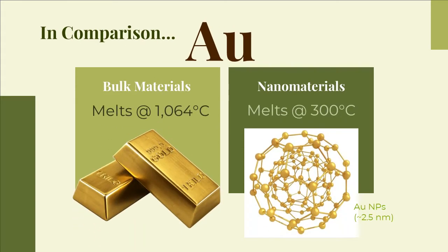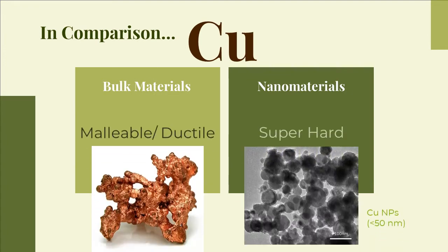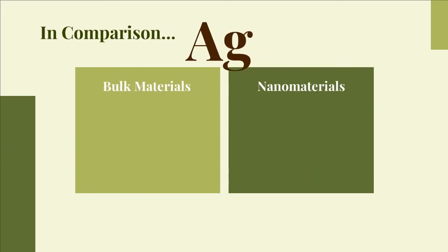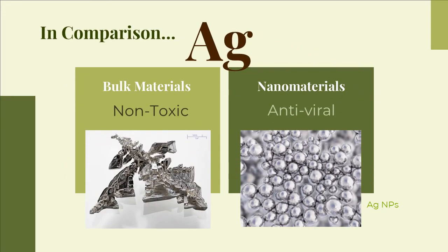For instance, gold nanoparticles around 2.5 nanometers in size melt at much lower temperatures, around 300 degrees Celsius, than gold slabs, which melt at 1064 degrees Celsius. Copper nanoparticles smaller than 50 nanometers are considered super hard materials that do not exhibit the same malleability and ductility as bulk copper. Bulk silver is non-toxic and unreactive, whereas silver nanomaterials have been shown to have antiviral activity.